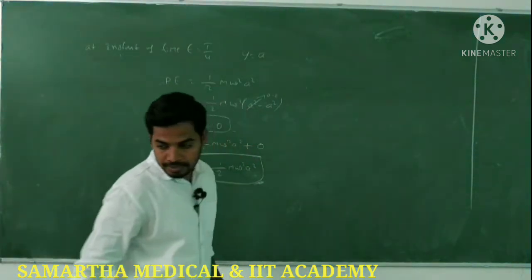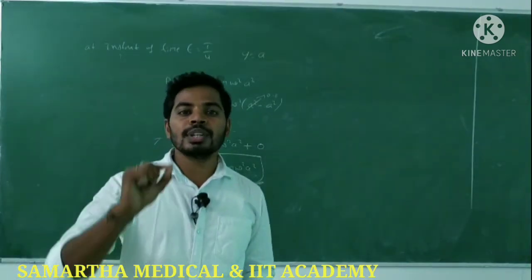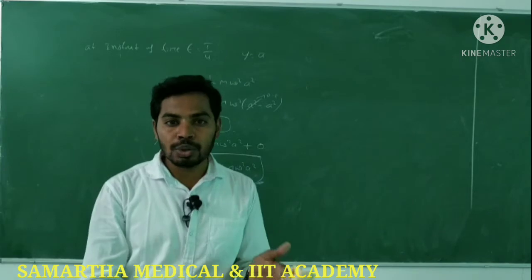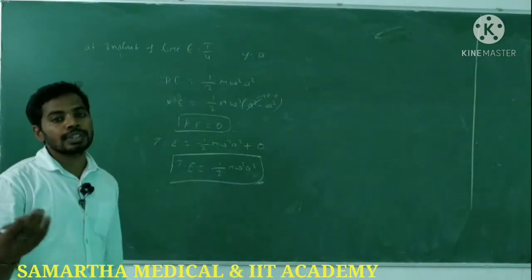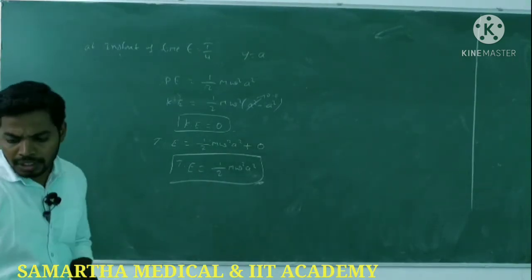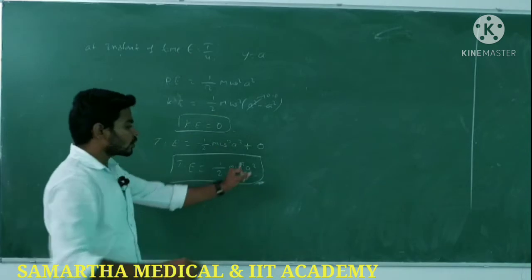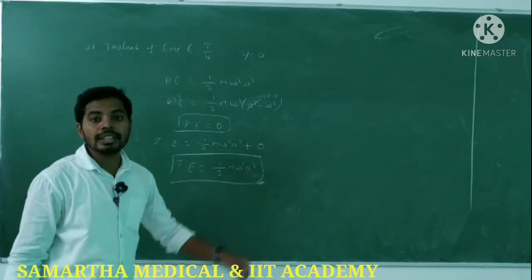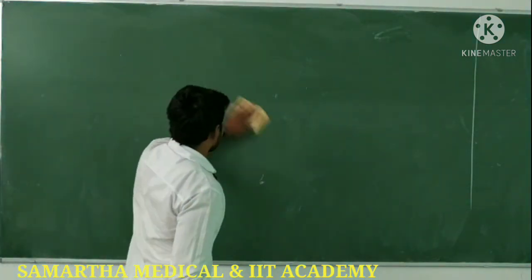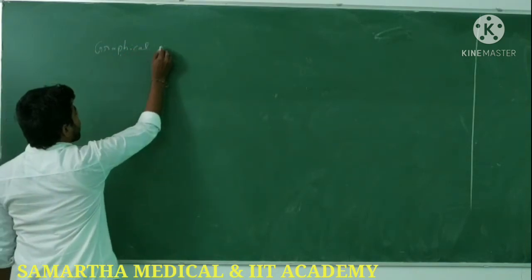Next, we discuss the relation between potential energy, kinetic energy, and total energy, and how they vary with time at t = 0, T/4, T/2, and T. The total energy ½mω²a² is constant at every position — at extreme position and at mean position it remains the same.